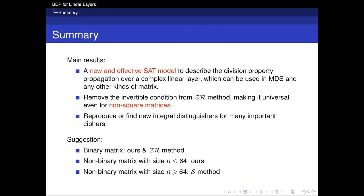In summary, our main result is a new and effective SAT model to describe the division property propagation over a complex linear layer, applicable to MDS or any other kind of matrix. We also remove the invertible condition from the ZR method, making it universal even for non-square matrices, and produce new integral distinguishers for many important ciphers. With many experiments, we have tips for choosing models: for binary matrices, our method and the ZR method are both suitable; for non-binary matrices with size n ≤ 64, our method is the best choice; for non-binary matrices with larger size, the S-method is the only choice. Thank you for your attention.